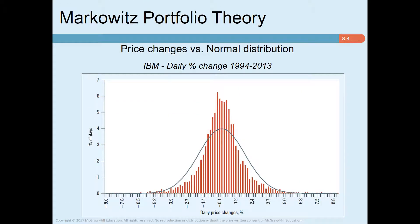Looking at this diagram, it shows a histogram of daily returns of IBM stock between 1994 and 2013. Superimposed on the diagram is a bell-shaped normal distribution curve. As you can see, when measured over a short interval, past rates of return on a stock conform fairly closely to a normal distribution — the histogram and the normal curve are fairly consistent.